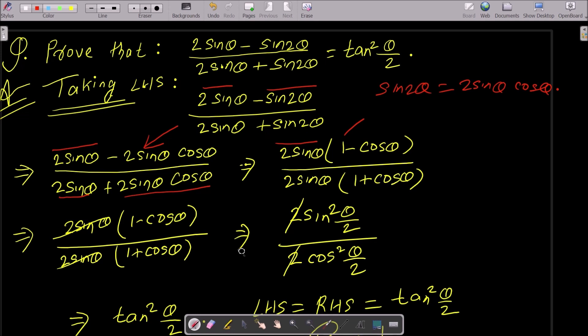The 2sinθ cancels. Then apply 1 - cosθ = 2sin²(θ/2) and 1 + cosθ = 2cos²(θ/2). The 2s cancel, sin/cos gives tan, so we get tan²(θ/2). I hope this video is helpful. Thanks for watching — see you in the next video.